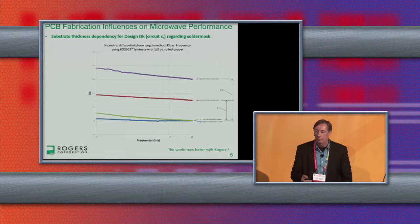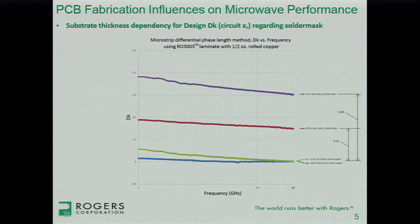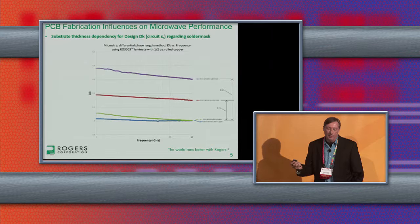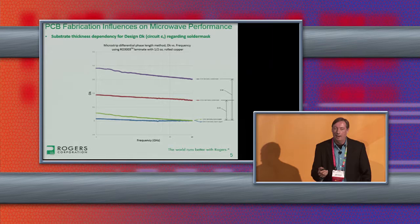Looking at how the circuit perceives dielectric constant, we measure this using the microstrip differential phase length method. We measure a short circuit and a long circuit for phase, calculate the effective dielectric constant, and back-calculate the dielectric constant as the circuit perceives it. For the thin 5-mil circuit, the bare copper is the green curve and the solder mask circuit is the blue curve — there's a pretty big difference, about 0.3 Dk difference. For the thicker 20-mil RO3003 material, there's again a pretty good size difference, about 0.15. So the bottom line is: when you put solder mask on, it's not just a loss issue — it can also be a dielectric constant issue, which affects impedance matching and other circuit functions.